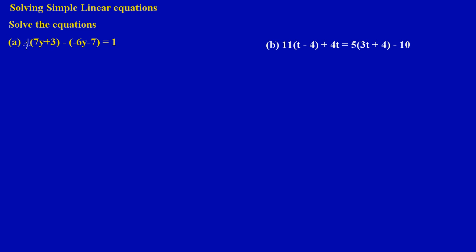Just treat this negative sign as a negative 1 — as if you're multiplying everything inside the bracket by negative 1. Negative 1 times a positive gives a negative, so negative 1 times 7y gives negative 7y. Negative 1 multiplied by positive 3 gives negative 3.